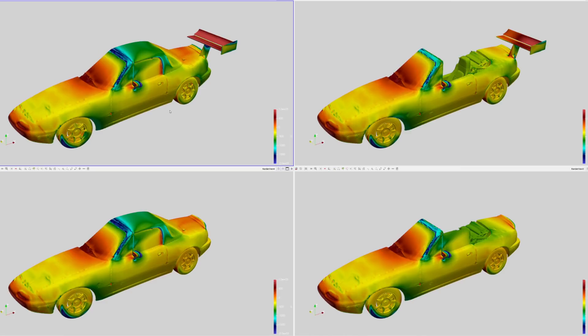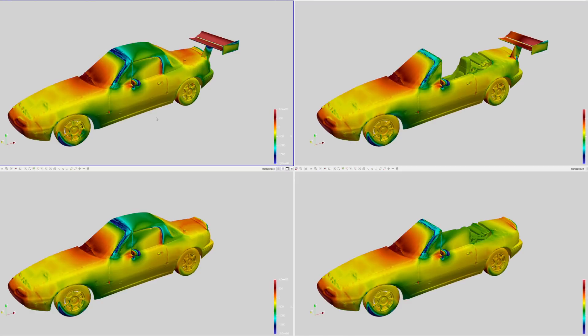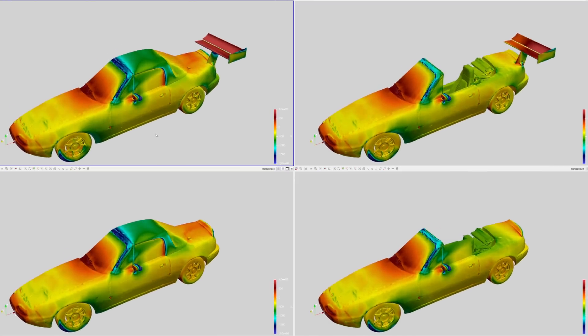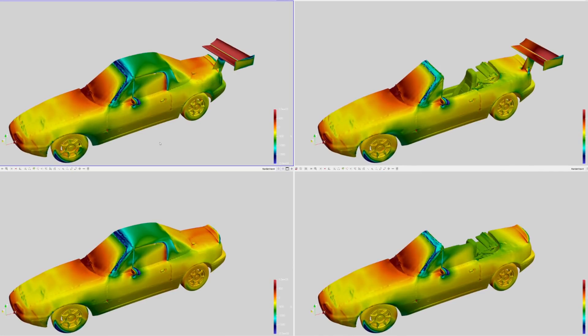So to wrap up and answer the question, no, having a roof off on a convertible car does not render a rear wing completely ineffective. However, it does result in a significant drop in the effectiveness and efficiency of the rear wing. You should always endeavor to ensure high quality clean airflow to the rear wing to maximize its performance and maximize overall downforce.